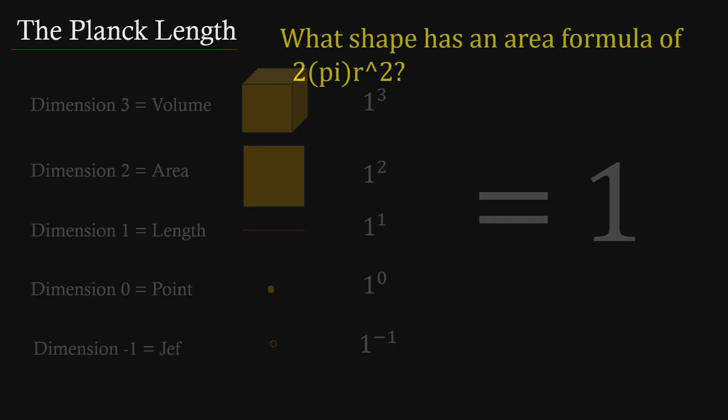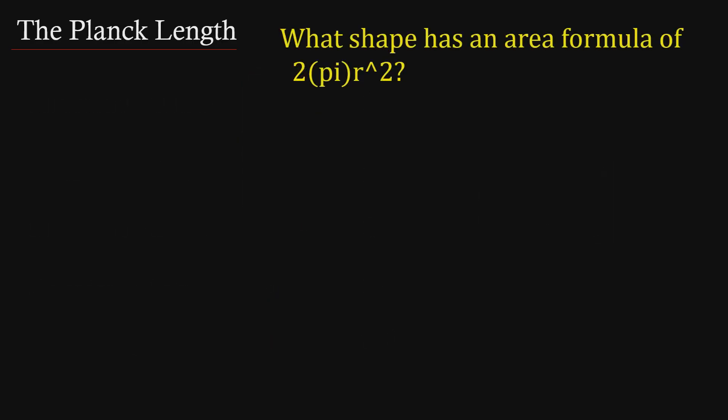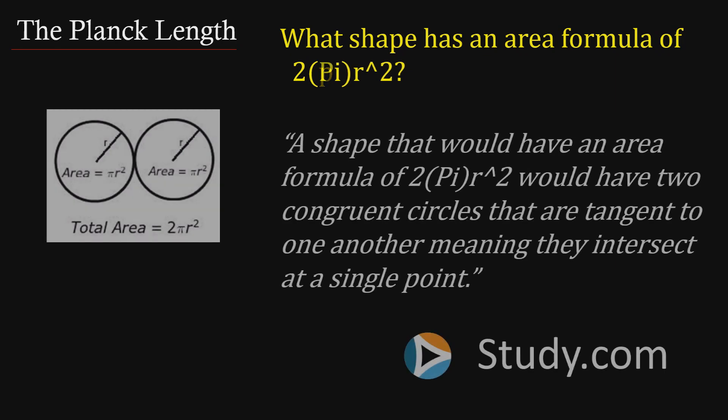Another issue we have has to do with our current notation and the shape of the object the notation implies. I recently came across an article online asking: what shape has an area formula of 2πr²? I was quite surprised to see this response from study.com. It states: a shape that would have an area formula of 2πr² would be two congruent circles that are tangent to one another, meaning they intersect at a single point. Hmm.